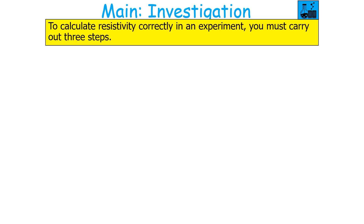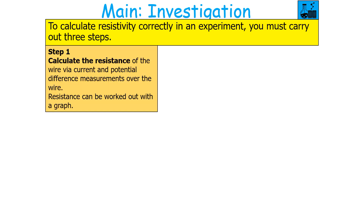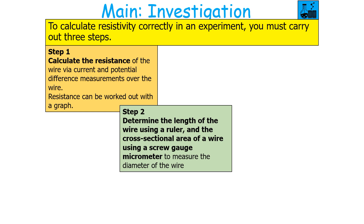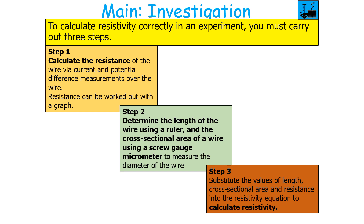To calculate resistivity correctly in an experiment you must carry out three steps. The first step is to calculate the resistance of the wire via current and potential difference measurements, and resistivity can be worked out with a graph. The second step is to determine the length of the wire using a ruler and the cross-sectional area using a screw gauge micrometer measuring the diameter. Then in the final step you substitute the values of length, cross-sectional area and resistance into the resistivity equation.